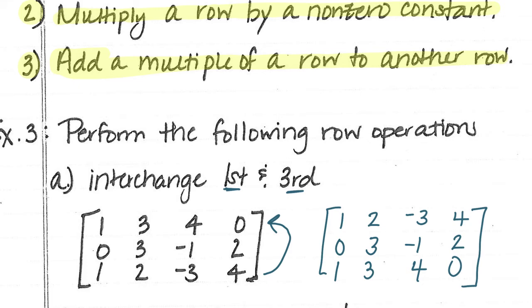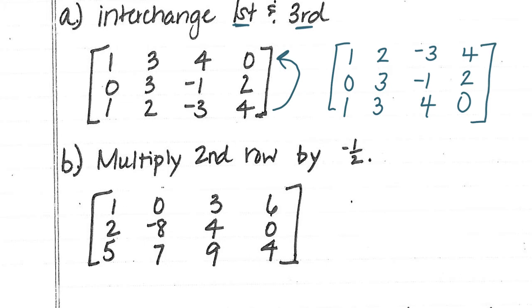The next question is just telling us to only multiply the second row by negative 1/2. Are we even touching the first and the third rows? We are not. So we still have 1, 0, 3, 6 in the top, and 5, 7, 9, 4 in the bottom. But I am taking this middle row and I'm multiplying it by negative 1/2.